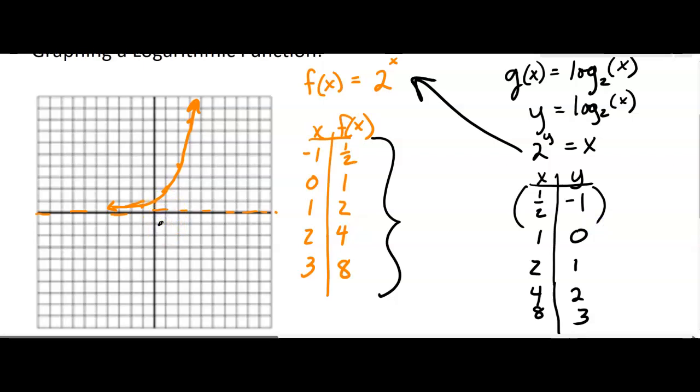So right there. The point 1, 0 would be right here. 2, 1 would be right there. And 4, 2, and then 8, 3. Can you see those little points in black?